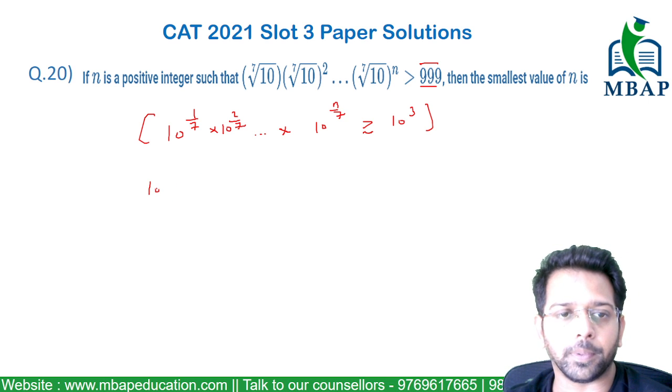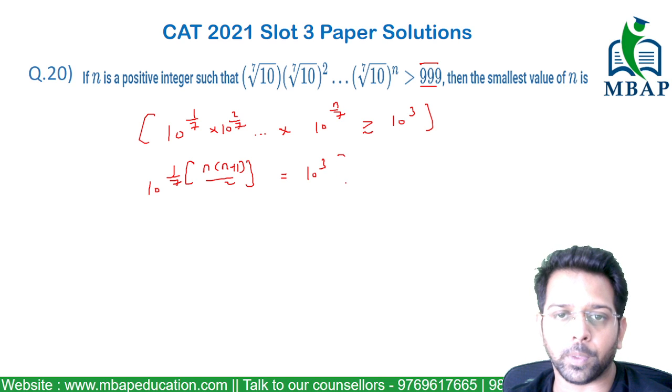Now since the base is common, possibly 10 raised to 1/7 will be taken out. This will be 1 till n. The sum of first n natural numbers will be given by n into n plus 1 divided by 2, which should be equal. Let us take this equal.